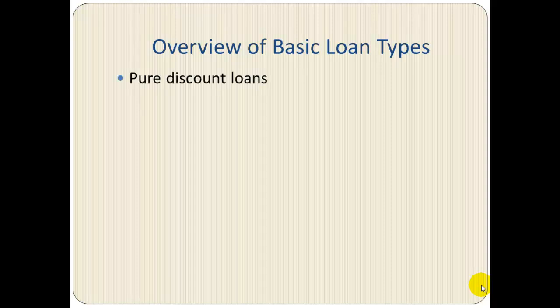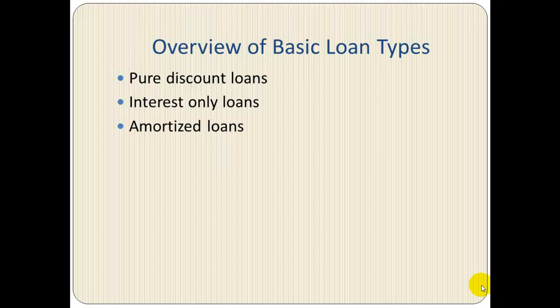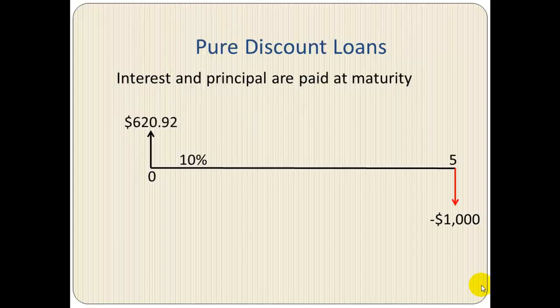Here is the overview of basic loan types. We have pure discount loans, interest-only loans, and amortized loans. What is the difference between these loan types?